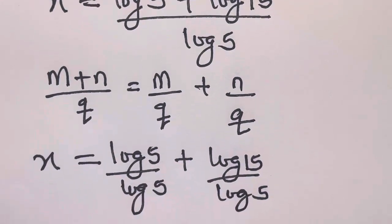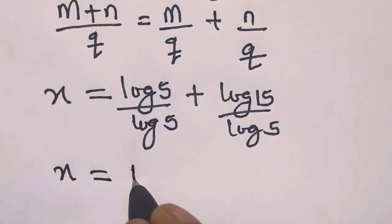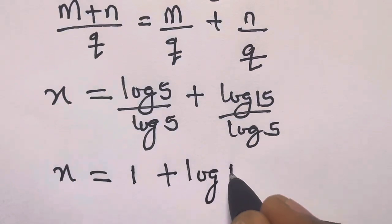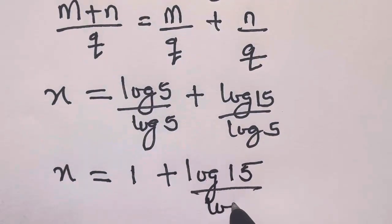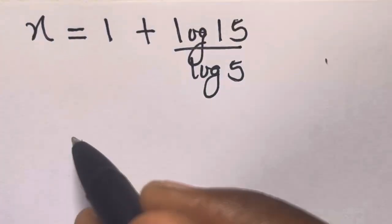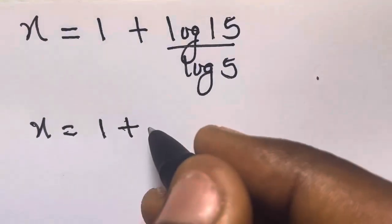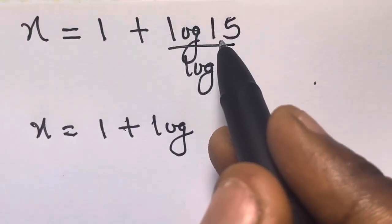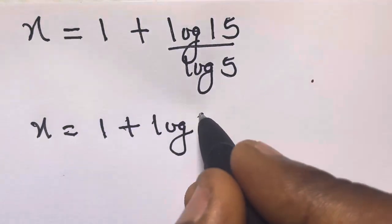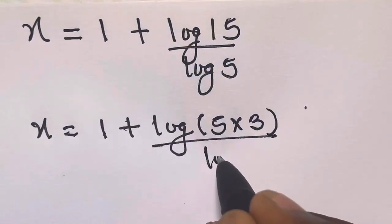Log 5 divided by log 5 equals 1, so we have x equals 1 plus log 15 divided by log 5. Now we break 15 down as 5 times 3, so x equals 1 plus log of 5 times 3, divided by log 5.